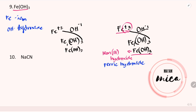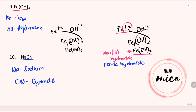Now let's proceed with number 10: NaCN. Na is the element symbol for sodium while CN is the symbol for the polyatomic ion cyanide. Just like naming binary compounds, we will just copy the name of the first element, which is sodium, then copy the name of the polyatomic ion, which is cyanide. Therefore, the chemical name for this chemical formula is sodium cyanide.